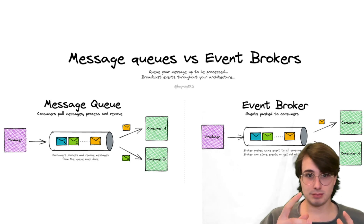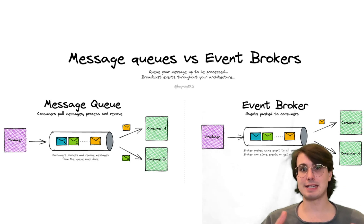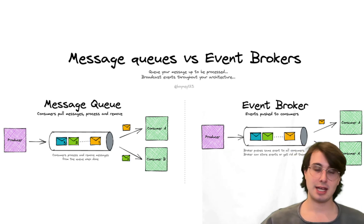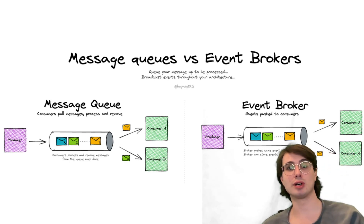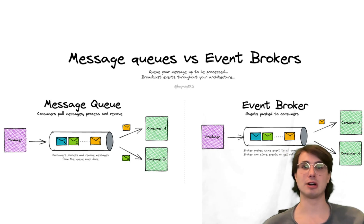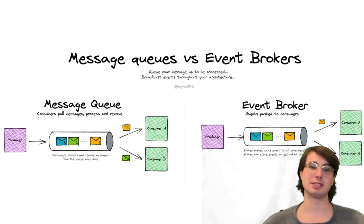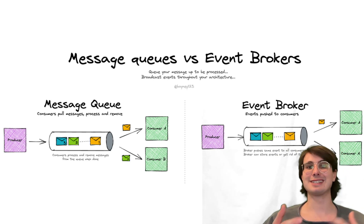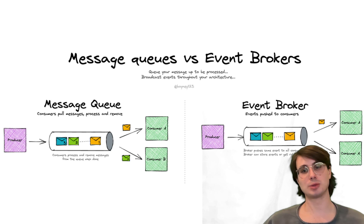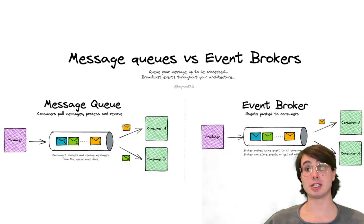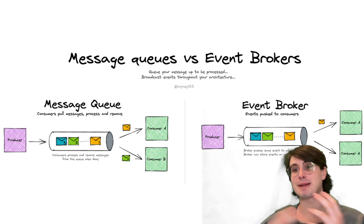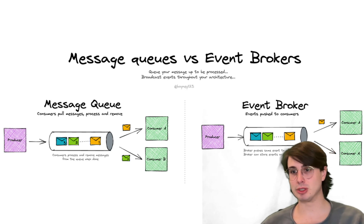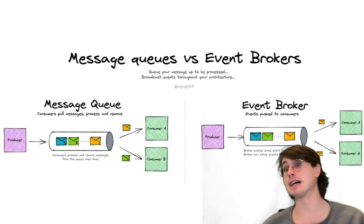Set up dedicated topics for different event types to reduce consumer complexity — for example, one topic for all errors and one topic for informational status updates. These are easily segmented for when you run into issues or need to go back and look at the raw data, making it really easily readable and accessible by any downstream sources or users.